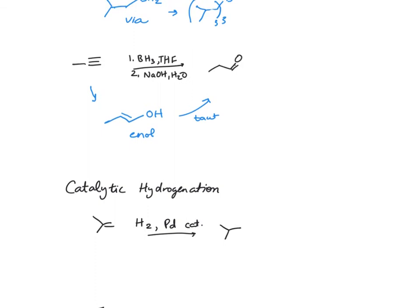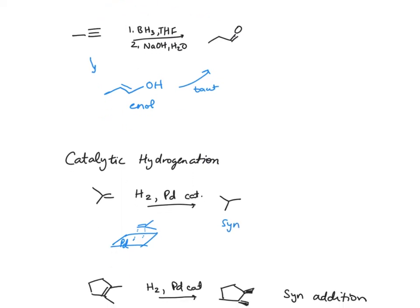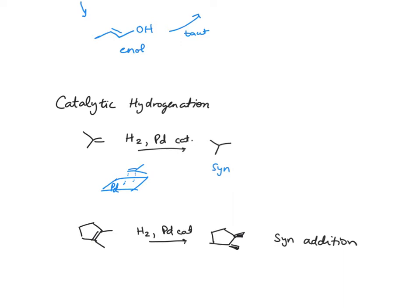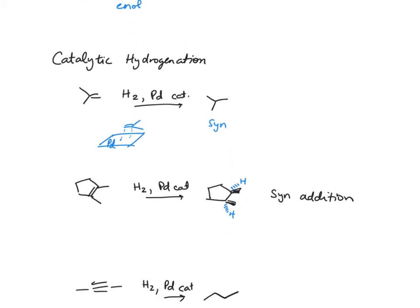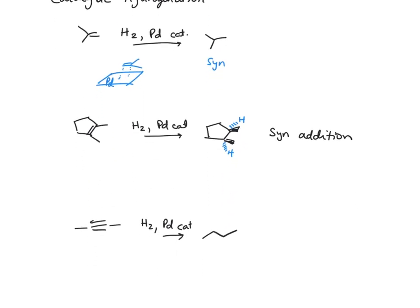In catalytic hydrogenation, we're adding hydrogen across the pi bond with a palladium catalyst. The alkene interacts with the palladium surface, which allows hydrogen to come in also bound to that surface and do a syn addition, meaning hydrogen adds to the same side. The reaction is the same for alkynes.